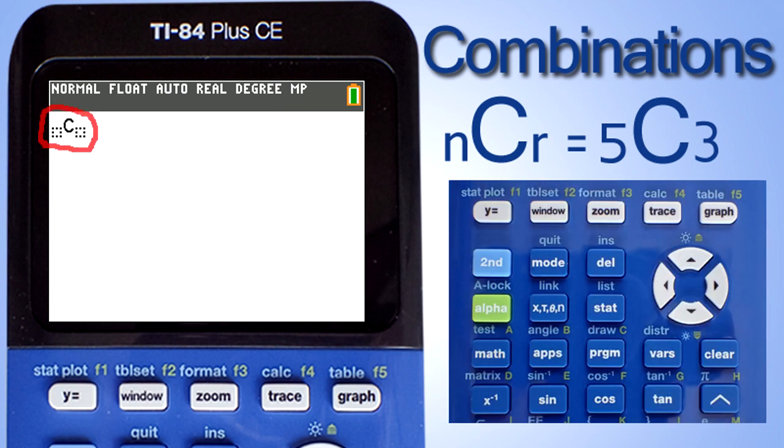Now on the calculator, you see the combination notation with the capital C and a small blank square before and after the capital C. This represents our combination formula n-c-r, with the n variable before the capital C and the r variable after the capital C.